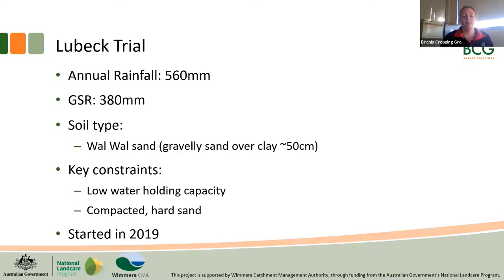Lubeck has an annual rainfall of 560 millimetres with a growing season rainfall of about 380mm. The soil type the trial is located on is what is locally known as a Walwa sand — it's quite gravelly and coarse, looks like washed riverbed sand, and sits over clay. The clay is there but it's quite deep. The key constraints to growing more biomass in this area were the low water holding capacity and the really hard compacted sand that prevented plant establishment and root growth.